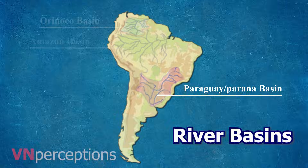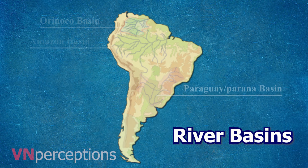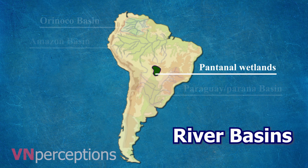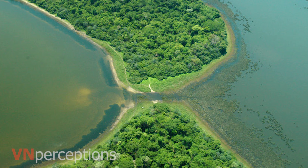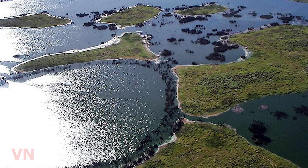The Pantanal is one of the largest wetlands in the world, lying towards the southwestern part of the highland areas. It is a region of swamps and marshes, located mostly within the Brazilian state of Mato Grosso do Sul, but extending into Mato Grosso and portions of Bolivia and Paraguay.